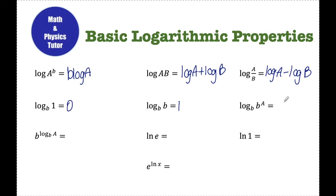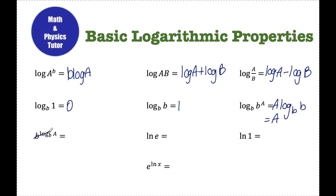For log base b of b to the a, I know from the power rule that I can rewrite that a in front, so it's a times log base b of b. We know that log base b of b is equal to one, so a times one is just a, which means that if the base and what I'm taking the log of match, the whole log essentially just cancels out and you're left with that exponent a. The same thing happens in reverse — if I have base b raised to an exponent that has a log with a matching base, the base and the log essentially cancel out and I'm left with what I was taking the log of, which is a.